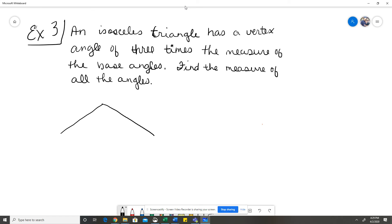My two base angles are each going to be X degrees because I don't know what they are, and my vertex angle is going to be 3X degrees because it said it was three times the measure of the base angles. So I'm going to go ahead and label these, and I know I'm doing A plus B plus C. I'm adding each of the angles.